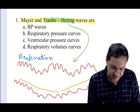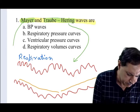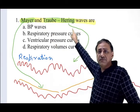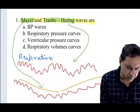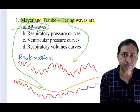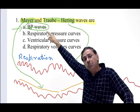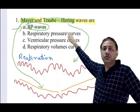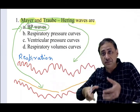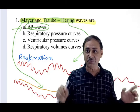This type of wave is known as Myers waves. So Myers waves and Traub-Hering waves are both BP waves — both are BP fluctuations. Traub-Hering is BP fluctuation because of respiration, and Myers waves are BP fluctuation because of feedback oscillations in a control system.